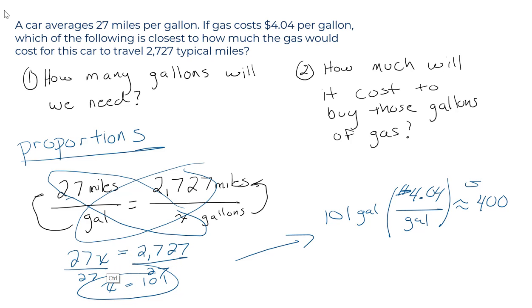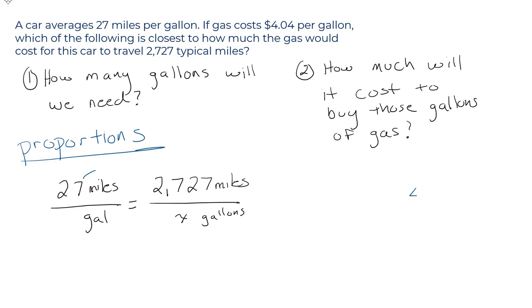What's another way you could do it? Also very good to know. Let's go back to go from 27 to 2,727. You would multiply by about 100. We said it's 101, but 100 close enough.